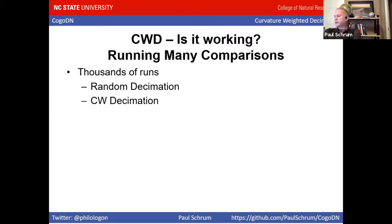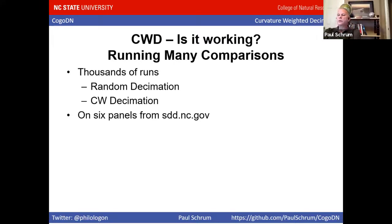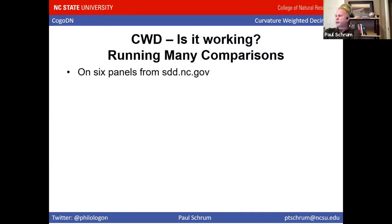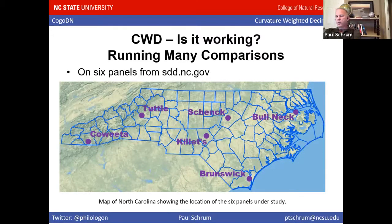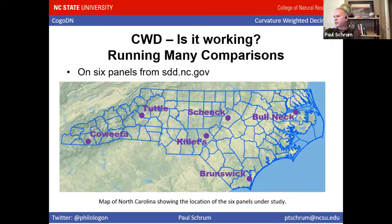Pictures are pretty but kind of anecdotal. To get a large amount of statistical data, I spent a week in December watching my computer run this over a thousand times — doing both random decimation and curvature weighted decimation and gathering statistics. I did this on six different panels to get a variety of terrain: Coweta in the mountains, Tuttle State Forest near Lenore, Killett's Creek, Schenck Forest (an NC State research forest), Brunswick County park, and Bullneck Swamp owned by NC State.